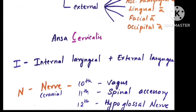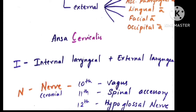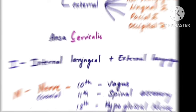The letter I also stands for internal laryngeal nerve plus external laryngeal nerve, which are branches of the vagus nerve. The cranial nerves present are the 10th (vagus nerve), 11th (spinal accessory nerve), and 12th (hypoglossal nerve). Thank you for watching. If you have any queries, please let me know in the comment section below. Please like, share, and subscribe.